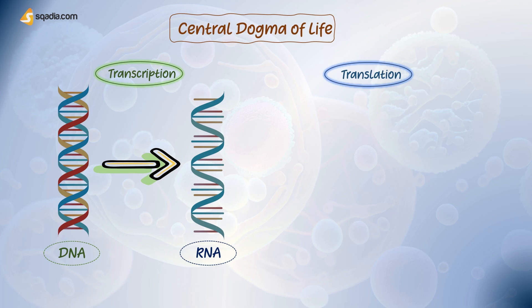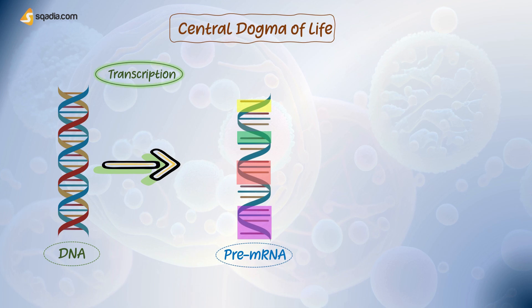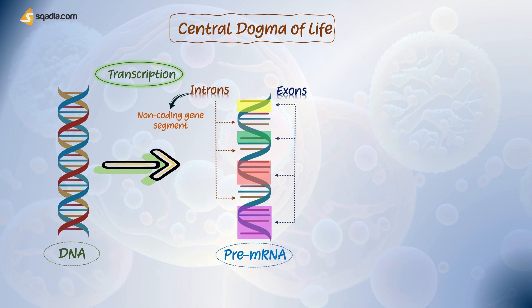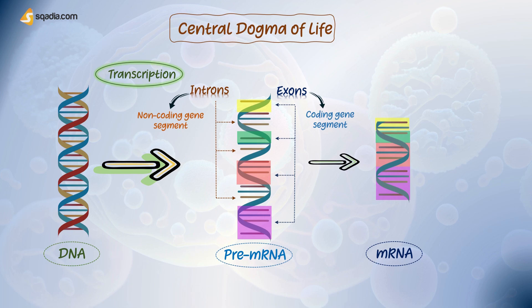But there is a twist: it first forms the pre-messenger RNA. This immature form of RNA contains both introns, which are the non-coding gene segments, and exons, which are the coding gene segments of RNA. In the next step, this pre-messenger RNA is converted into messenger RNA via the process called RNA splicing. This spliced messenger RNA now only consists of the coding gene segments — the exons — as the introns have been spliced out.